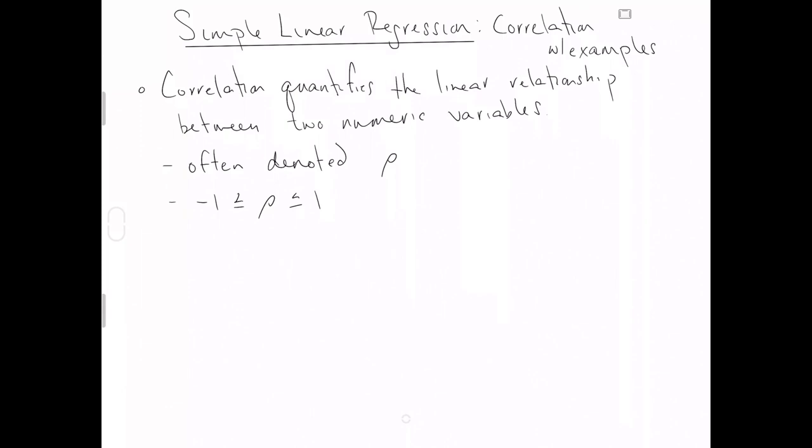But in fact, rho can be any number in between negative 1 and positive 1. We think of the sign of rho dictating directionality of the relationship.